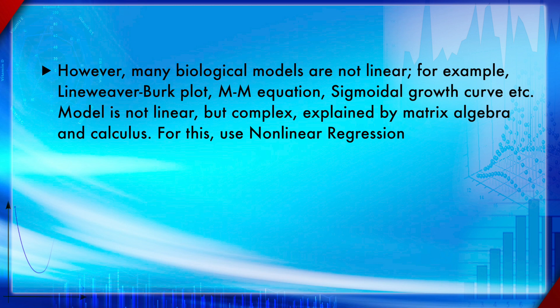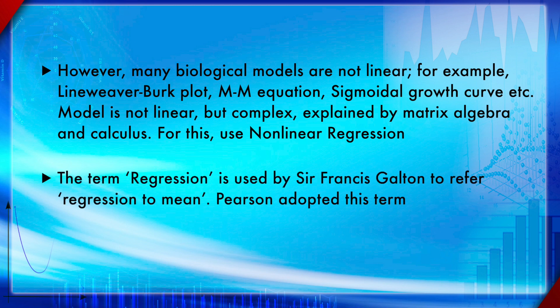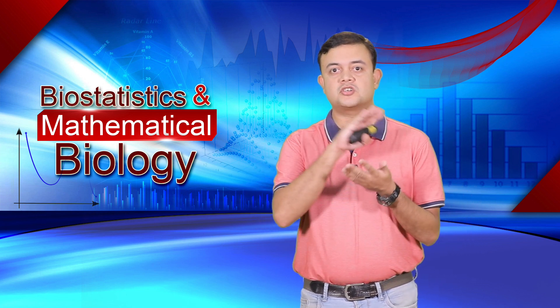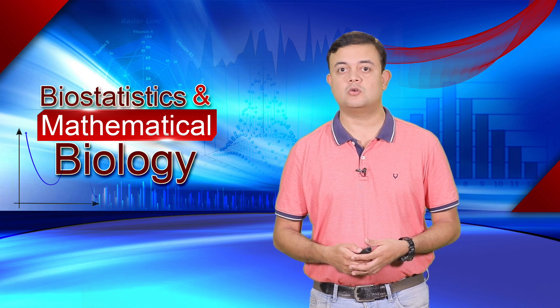The term 'regression' was used by Sir Francis Galton to refer to 'regression to the mean,' and Pearson adopted this term. It means the initial value of a measurement could be extremely high, but with many samples it normalizes back toward the mean. An initial value that is too high or too low will, after multiple measurements, come back to the mean.